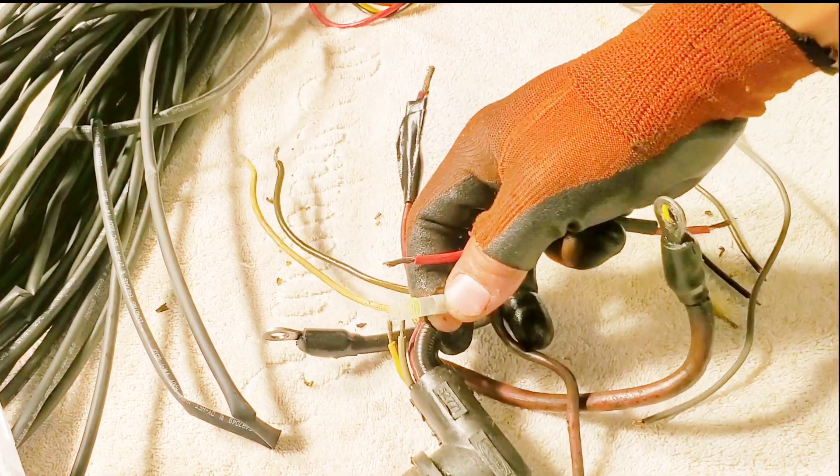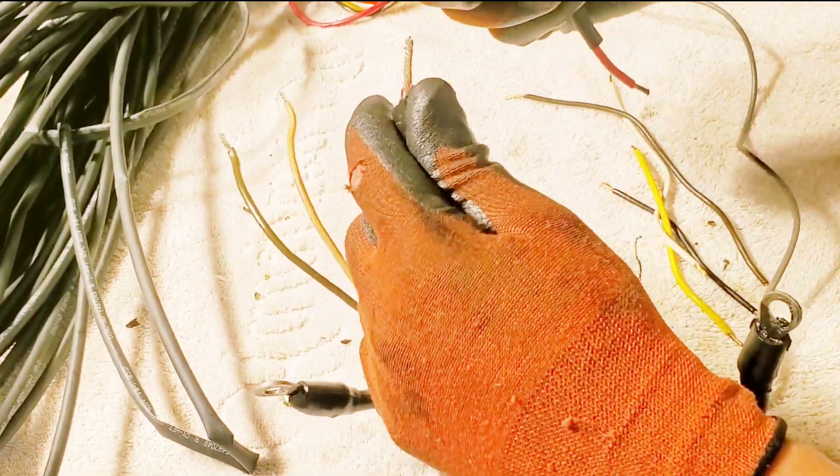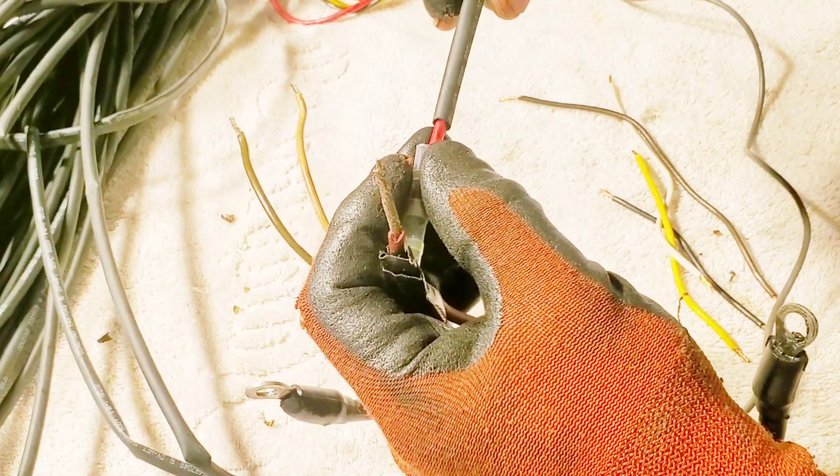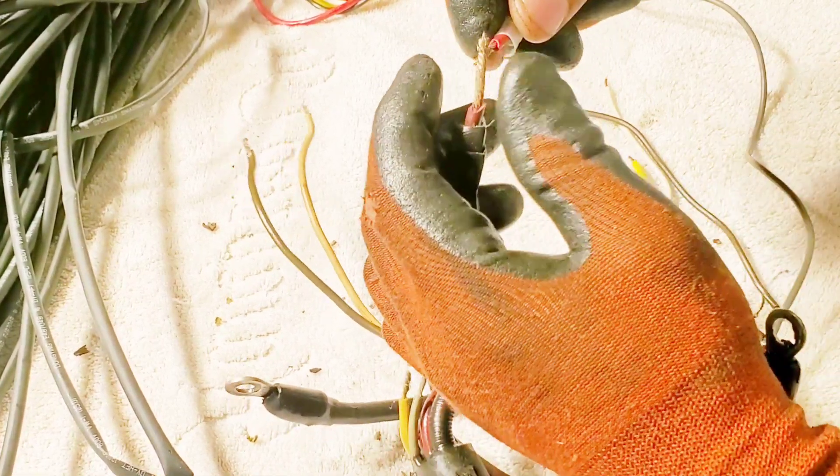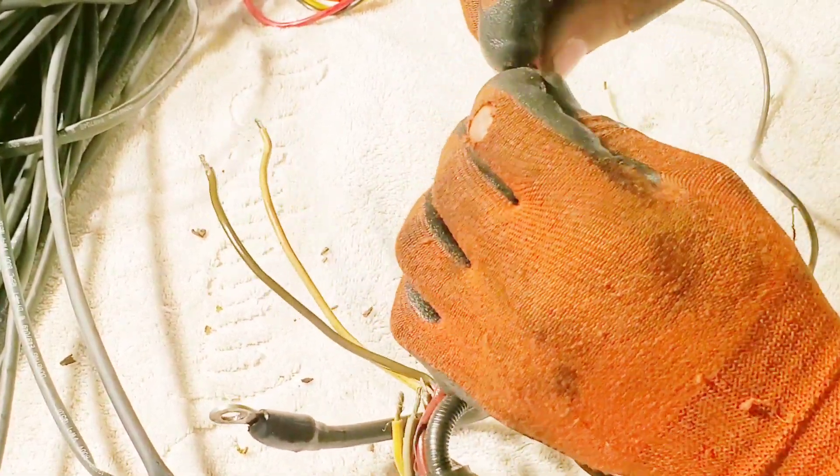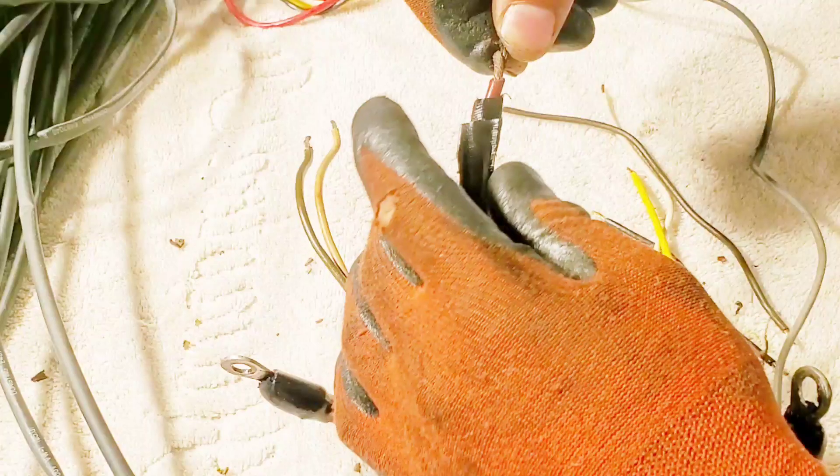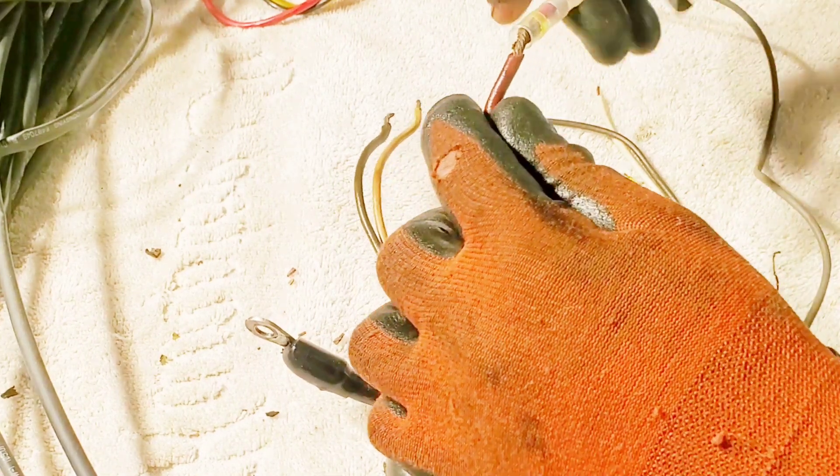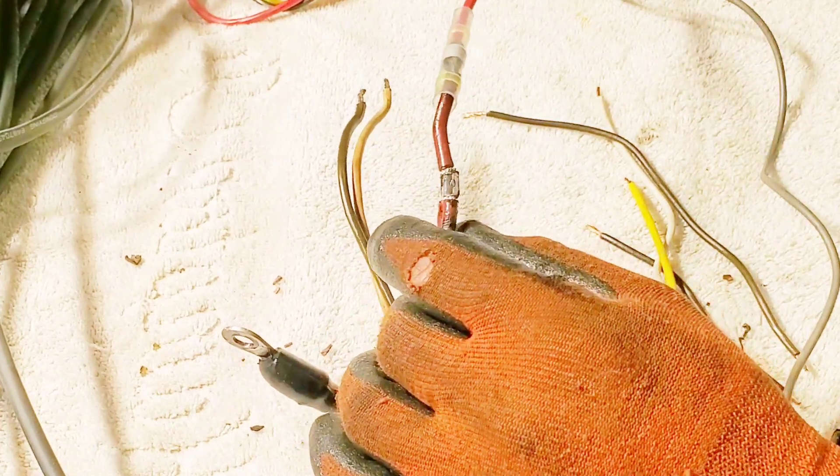All right, so we're ready to splice the main power cord in right now. Again, I'm using these because these are convenient. Shrink tubing on there just for double security. I like to twist these wires together. Okay, so now we're going to solder those wires together with just a regular Bic lighter.